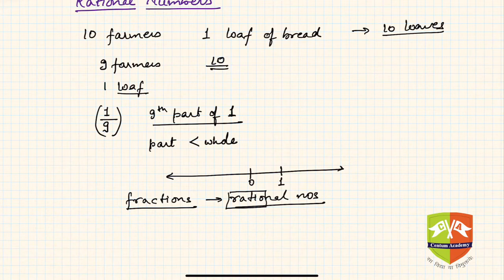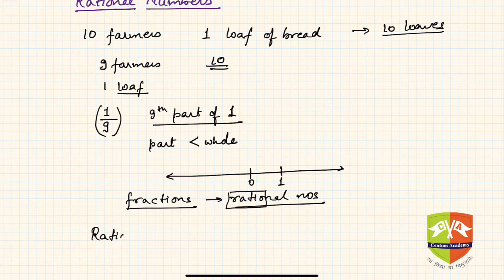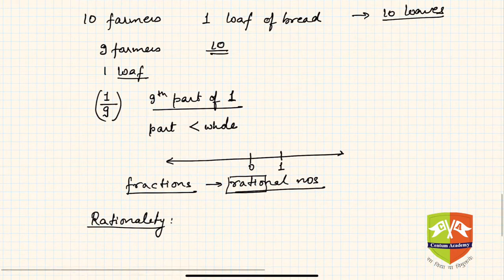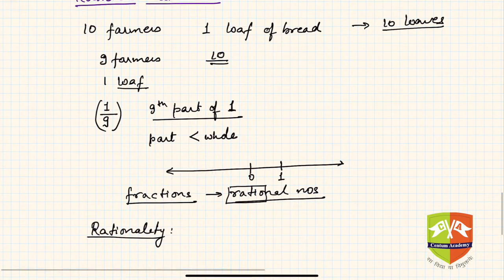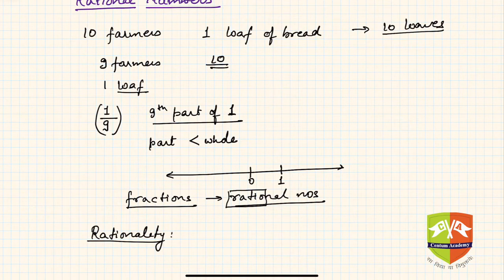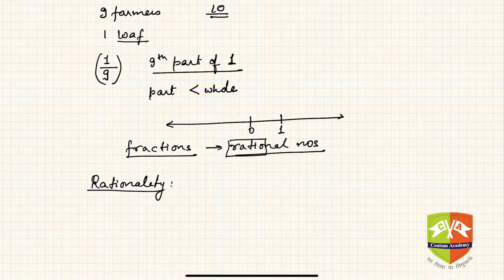You can also notice that 'rational' contains the word 'ratio' — rational numbers are a kind of ratio of two integers. But more importantly, rationality means objectivity, where you can explain and justify things. Irrationality means reasons are not known or things are unjustified.